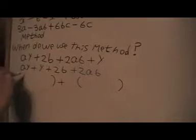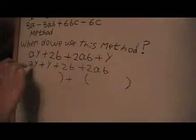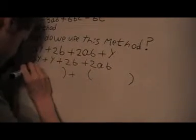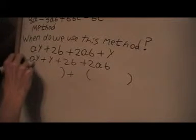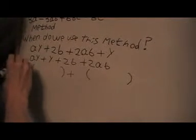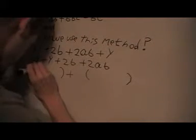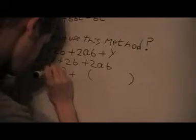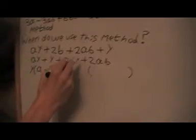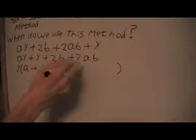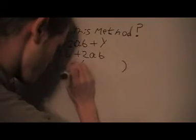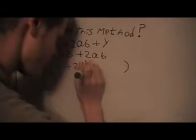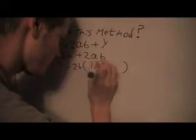Now what I can do is factor out a y from the first part and I'm left with (a + 1) in brackets. Then from the second part I can factor out 2b and I get (1 + a).